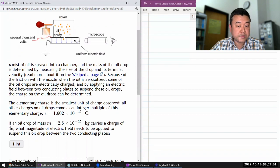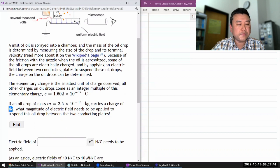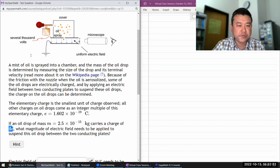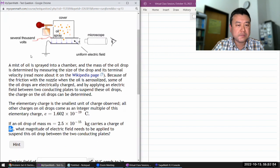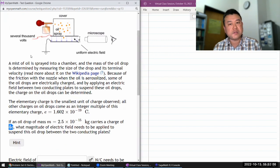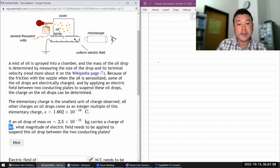And element charge, all other charges come as integer multiples, right? The mass carries a charge of four of these elementary charges. What magnitude of the electric field needs to be applied? So as you read through this description, some of that sounds like something that you could have seen in physics 4a.